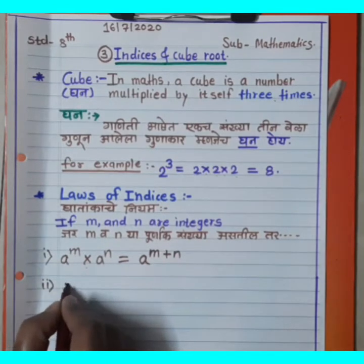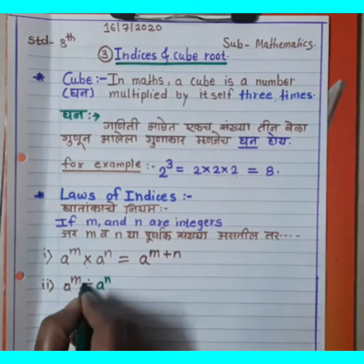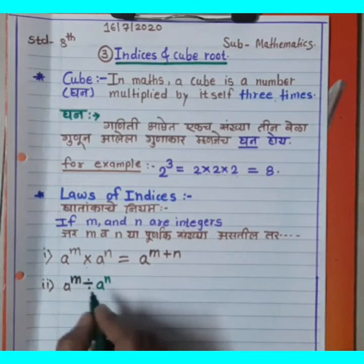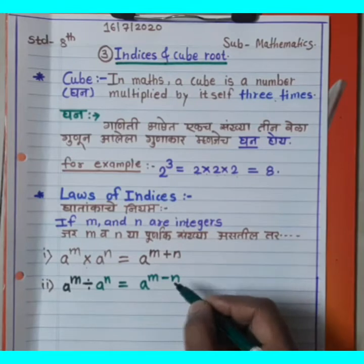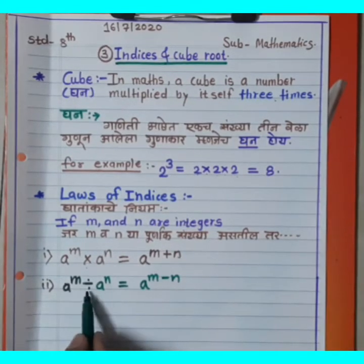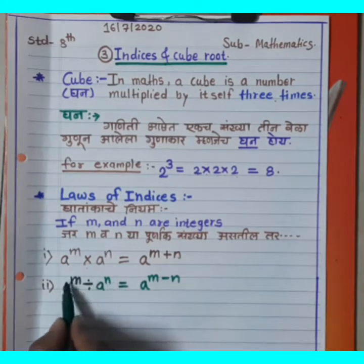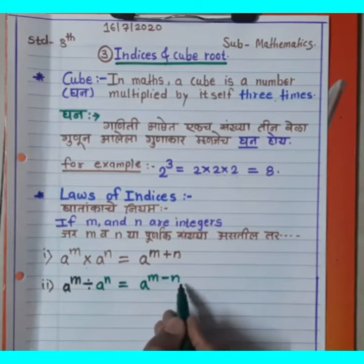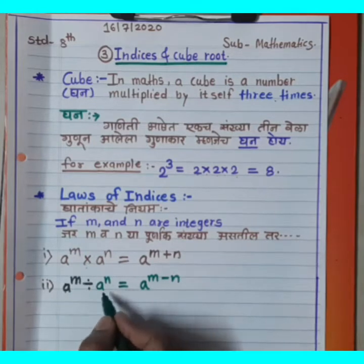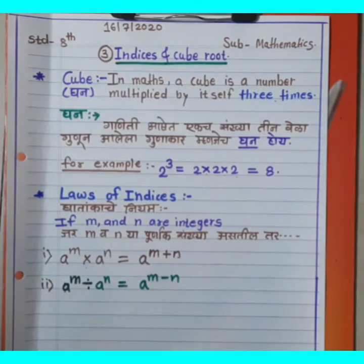Second Rule: A raise to M divided by A raise to N. This is the opposite rule. When the base is the same and you divide, you subtract the exponents. So A^M ÷ A^N = A^(M−N). A cha M waa ghat divided by A cha N waa ghat equals A cha M minus N waa ghat.